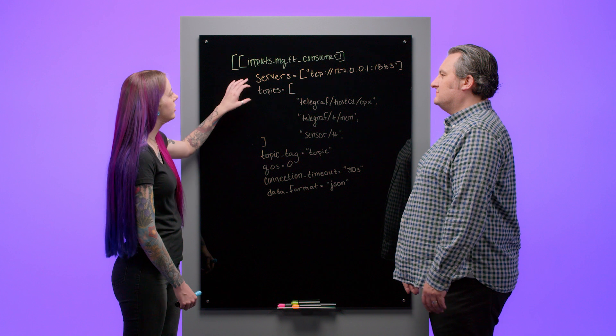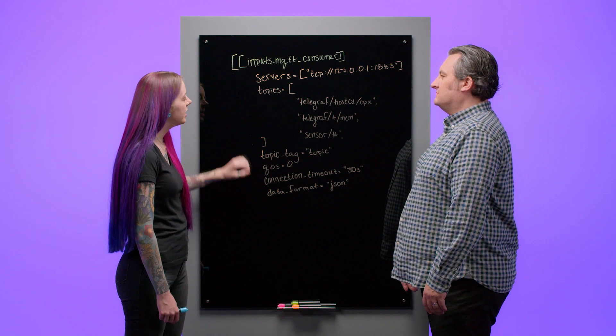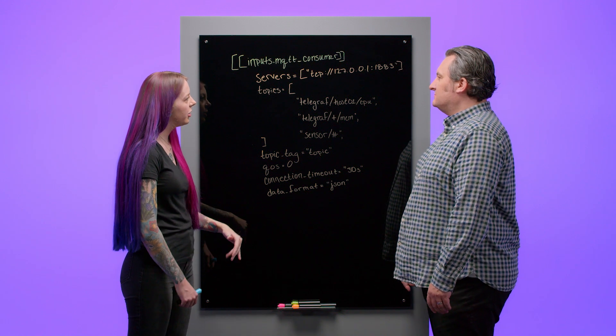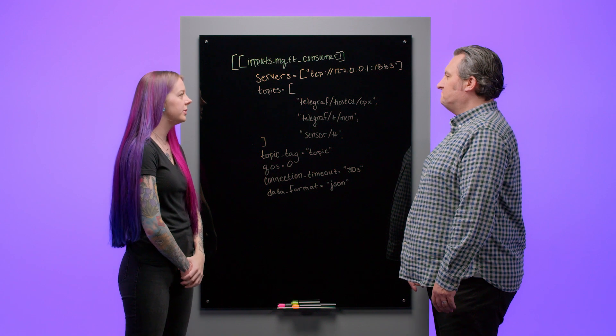And which are the necessary options? The three options you have to set are the servers, the topics, and your data format. The rest can be omitted and will automatically default. That's great.